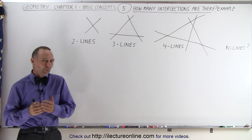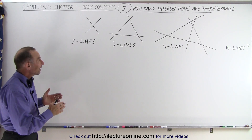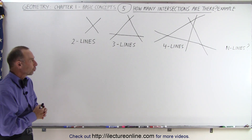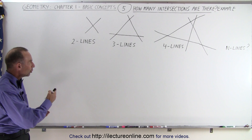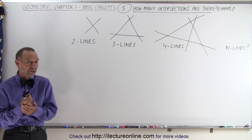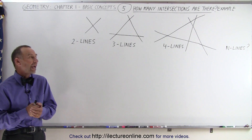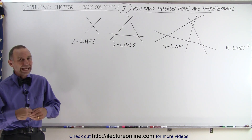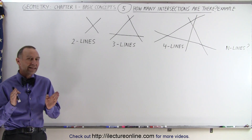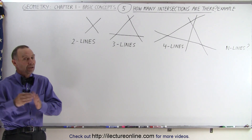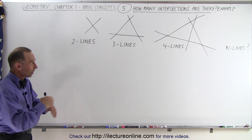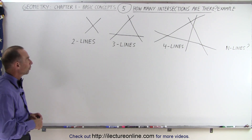Welcome to our lecture online. What we're going to do in this video is take a look and see how many intersections there are between the lines when we have two lines, three lines, four lines, and from that we should be able to figure out how many intersections we have when we have n lines — any number of lines. The condition is that the lines cannot be parallel to one another, because parallel lines never intersect, so none of the lines can be parallel to any of the other lines in the group.